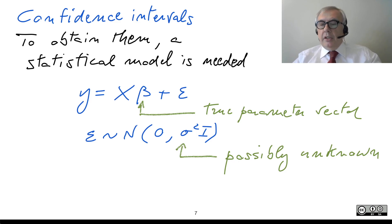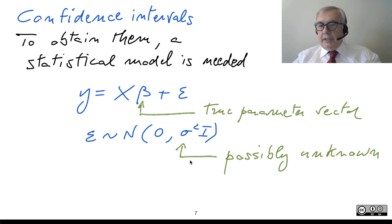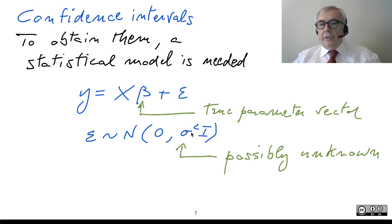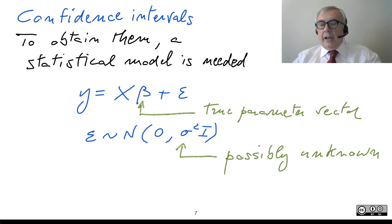As a matter of fact, there are also some interesting results that hold when you do not specify the distribution of the error. An important issue is sigma-square: it is the variance of the i-th error. If you think of epsilon as a measurement error, sigma-square is the variance of the measurement error.